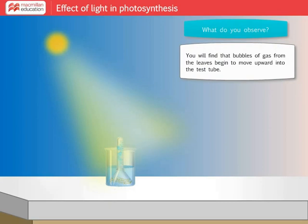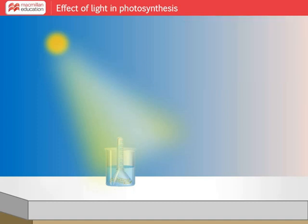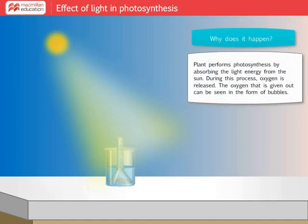Why does this happen? Plant performs photosynthesis by absorbing the light energy from the sun. During this process, oxygen is released. The oxygen that is given out can be seen in the form of bubbles.